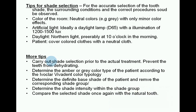Tips for shade selection. For accurate selection of tooth shade, the surrounding conditions and correct procedures should be observed. The colour of the room should be neutral — for example grey — with only minor colour effects. Artificial light should ideally be a daylight lamp (D65) with an illumination of 1200 to 1500 lux. For daylight, northern light is preferable at around 10 o'clock in the morning. Patients should cover coloured clothing with a neutral cloth. Carry out shade selection prior to the actual treatment, which prevents the teeth from dehydrating. Determine the amber or grey colour type of the patient according to the Ivoclar Vivadent colour typology, then determine the definite base shade, remove the corresponding shade group, determine the shade intensity within the group, and compare the selected shade once again with the natural tooth.